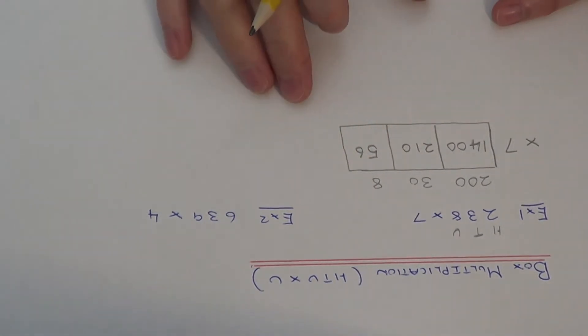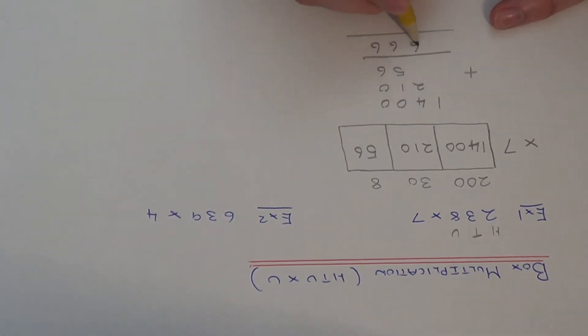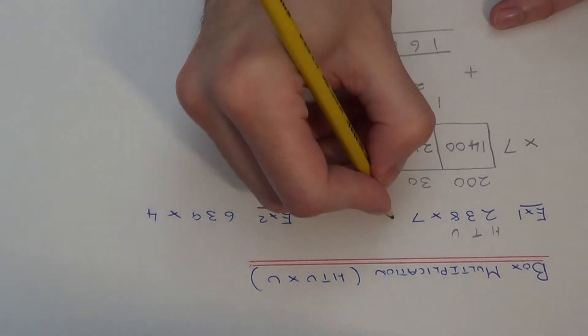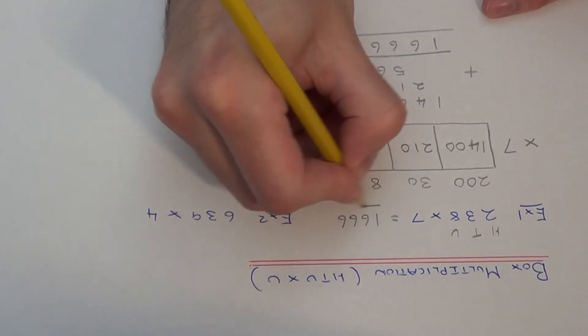So once you've got those three numbers we just need to add those up, so 6, 6, 6 and 1. So our final answer is 1666.